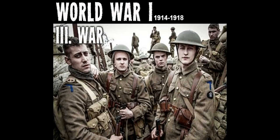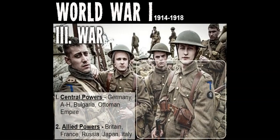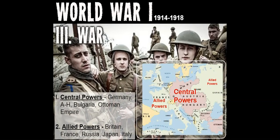World War One lasted from 1914 to 1918. There were two major alliances: the Central Powers — Germany, Austria-Hungary, Bulgaria, and the Ottoman Empire — and the Allied Powers — Britain, France, Russia, and Italy. Austria-Hungary declared war against Serbia due to the assassination of Archduke Ferdinand, and it set off a chain reaction within the alliance system. Countries followed through on their pledges to support one another, and nearly all of Europe soon joined what would be the largest, most destructive war the world had seen yet.